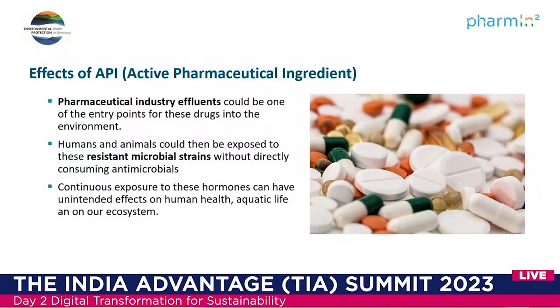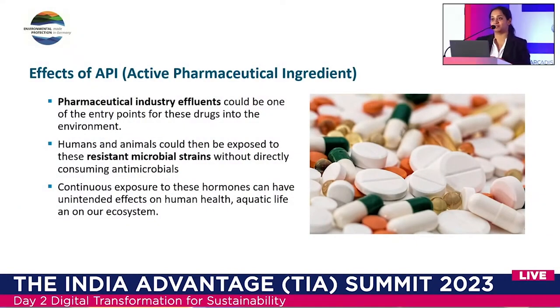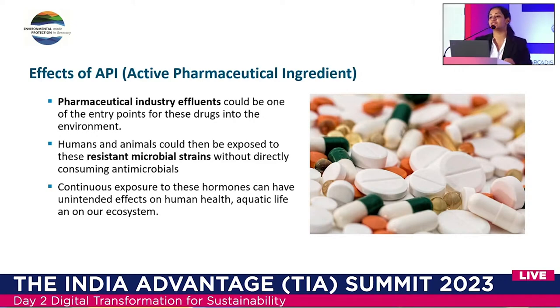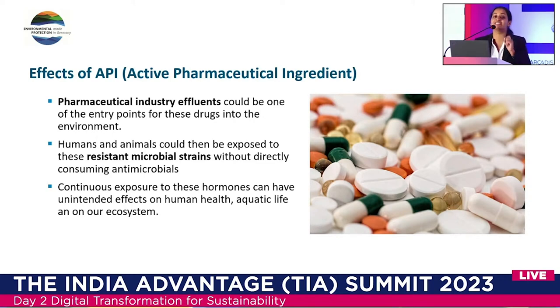Before moving on to the technical things, let me give you a quick background on the effects of APIs on the environment. API stands for Active Pharmaceutical Ingredients — in simple words, it is the most active biological component of a drug or medicine which has the ability to cure or prevent a particular disease. But it also has serious negative impacts. Pharmaceutical effluents could be one entry point for these drugs into the environment. Once released into water bodies without proper treatment, humans and animals can be exposed to these drugs without directly consuming them, and their continuous exposure may lead to unintended effects on humans, aquatic life, and even whole ecosystems.